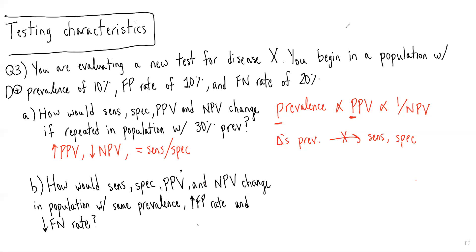Part B of the question is asking how would sensitivity, specificity, PPV, and NPV change in a population with the same prevalence, an increased false positive rate, and a decreased false negative rate? When we draw our table, we always put disease status on top and test result in the rows.